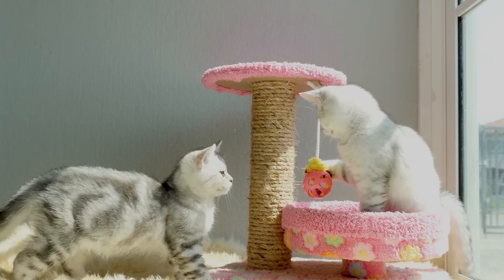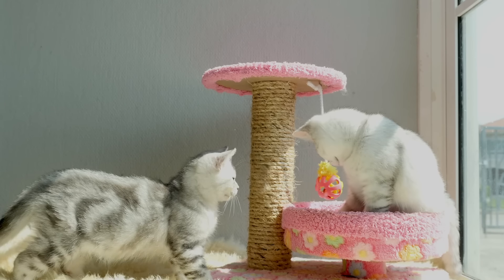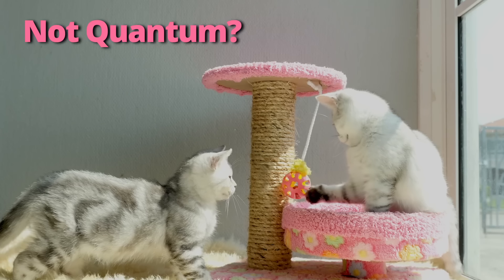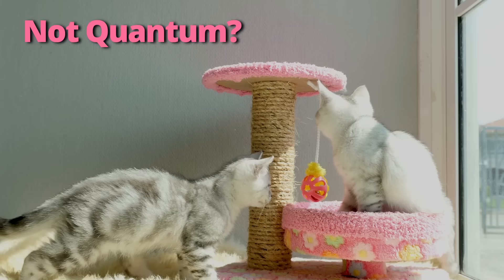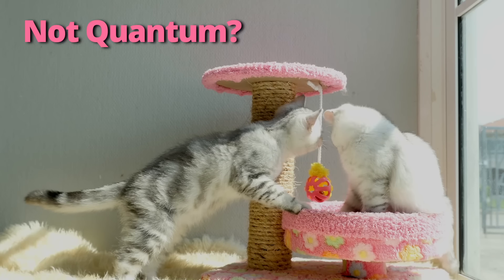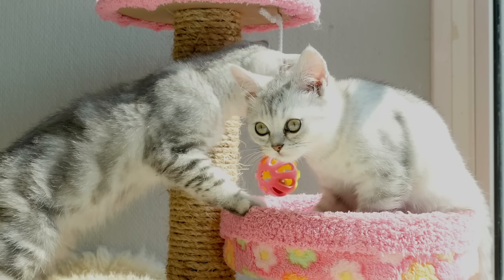One way to explain this is that quantum behavior indeed goes away for macroscopic objects. If it were so, this'd be a really, really big deal. Because as I said, quantum mechanics itself says that quantum behavior does not go away for big things. The trouble is, it's very difficult to measure this.